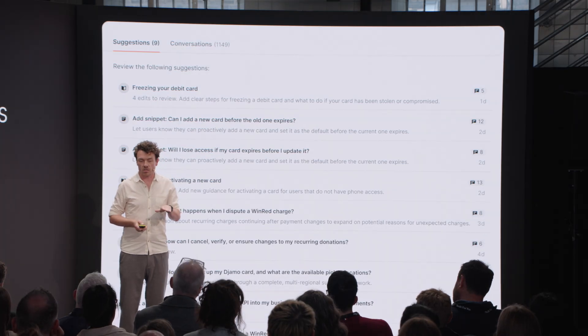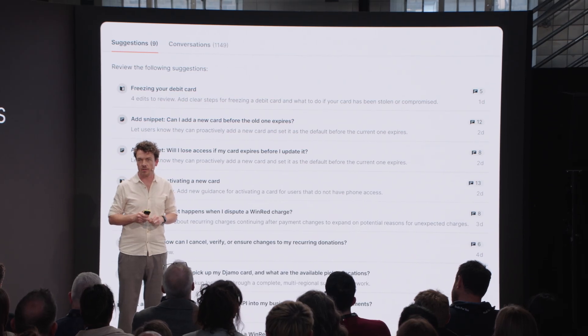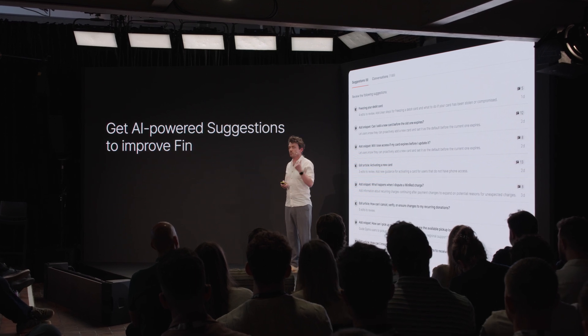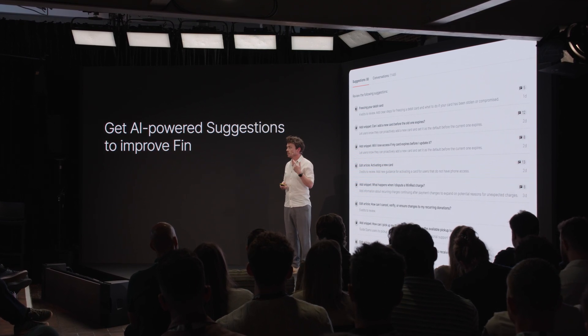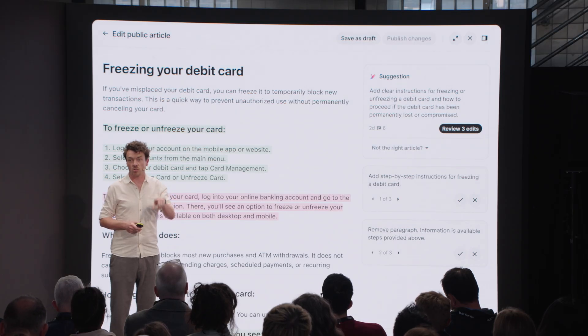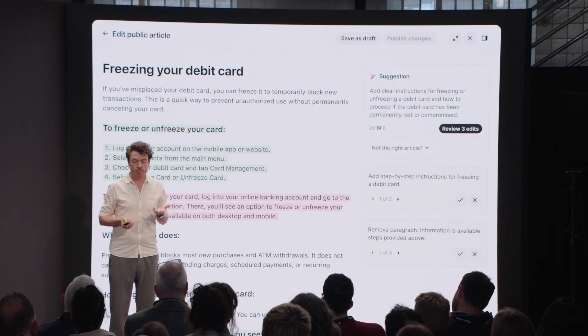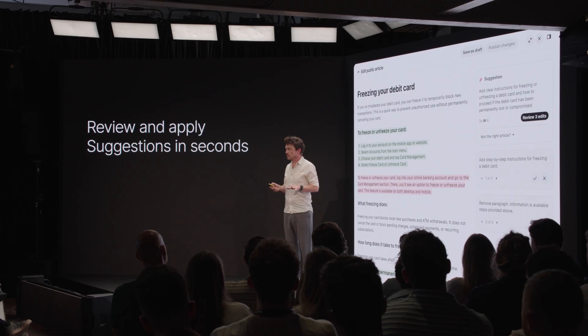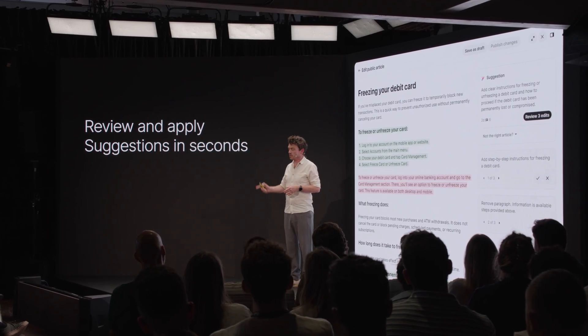You can see already in the screenshot there are many many suggestions — many ways you could make your customer experience way better. When you click into the suggestions you get a list of all of the AI-powered suggestions that can help Finn perform better: edits to existing content, suggestions for new content, deleting content, changing confusing content — loads of AI-recommended suggestions. When you click into a suggestion it looks like this: you can open a suggestion, you've got a simple summary showing you things you should edit, change, delete, or add.